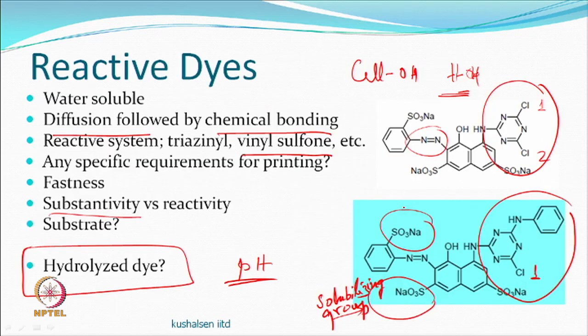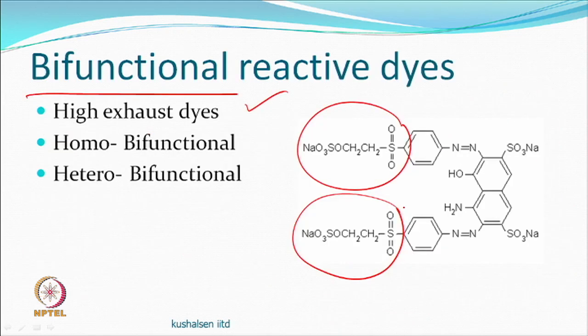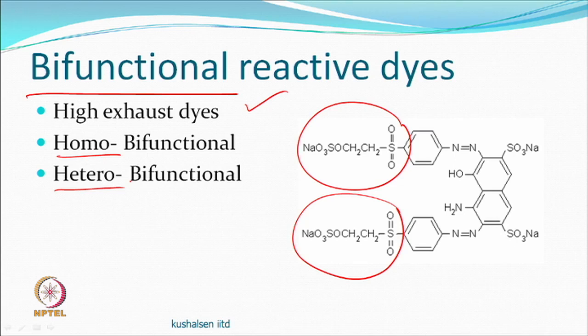Note that dichlorotriazine dyes with two chlorines on the same reactive group are not called bifunctional — bifunctional dyes have two different reactive groups. They can be homo-bifunctional, such as both vinyl sulfone, or hetero-bifunctional with one triazinyl and one vinyl sulfone group. They get exhausted well, require higher temperature for fixation, are stable in paste, and are good for printing all fibre types.